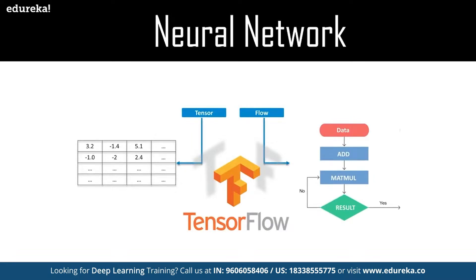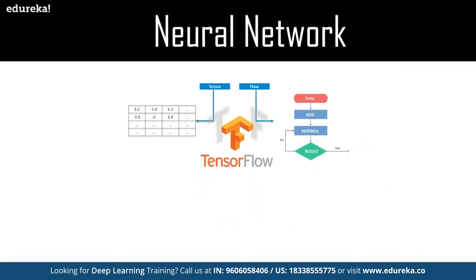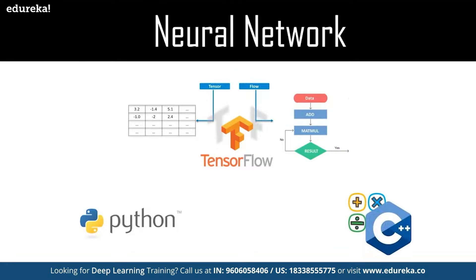Each node in the graph represents a mathematical operation, and each connection or edge between nodes is a multi-dimensional data array, or tensor. TensorFlow provides all of this via Python, which is easy to learn and provides convenient ways to express how high-level abstractions are coupled together. Nodes and tensors in TensorFlow are Python objects, and TensorFlow applications are themselves Python applications. However, the actual math operations are not performed in Python — the transformation libraries available through TensorFlow are written as high-performance C++ binaries, with Python directing traffic and providing high-level programming abstraction.